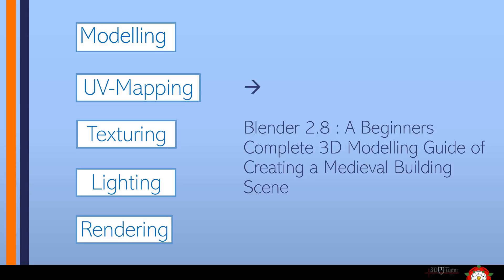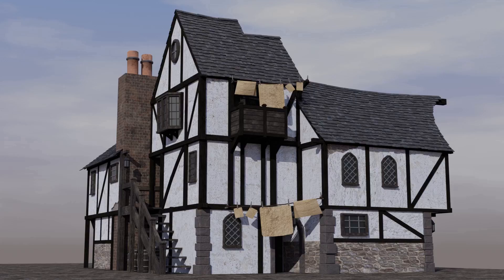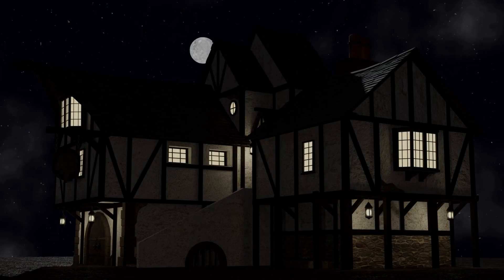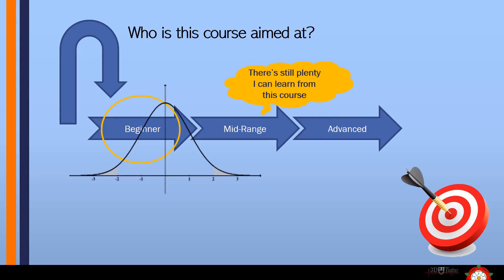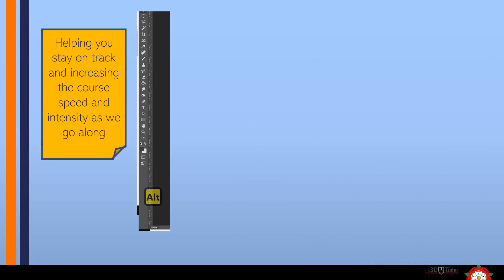I have years of experience working with assets and environments set in the medieval era, so I put together this course to show you everything I've learned. I wish I had a thorough tutorial when I first learned how to use all the different elements of Blender. I hope this lets you quickly grasp all the basic concepts of modeling, UV mapping, texturing, lighting, and rendering. This course is aimed at complete beginners to Blender, but we've integrated a sophisticated learning curve so even mid-level users will find plenty to learn. The lessons will start off slow, explaining everything down to the very last button press.